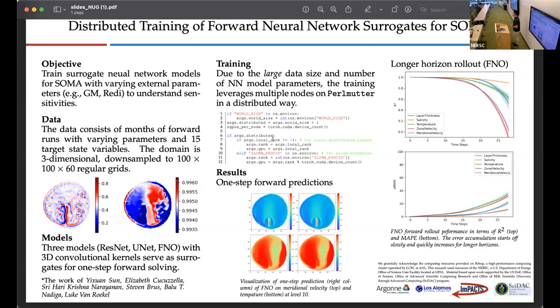We train three neural network models, namely Residual Network, U-Net, and Fourier Neural Operator for a step forward solving purpose, and we use three-dimensional convolutional kernels for the ResNet and U-Net because of our domain.